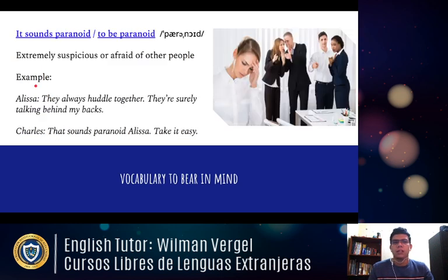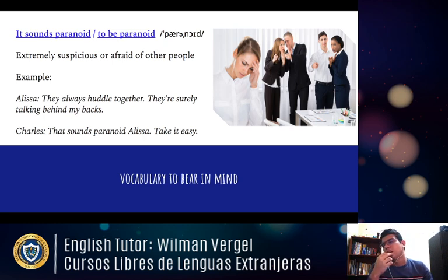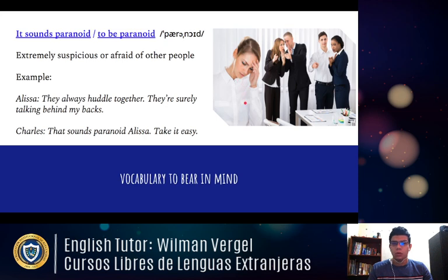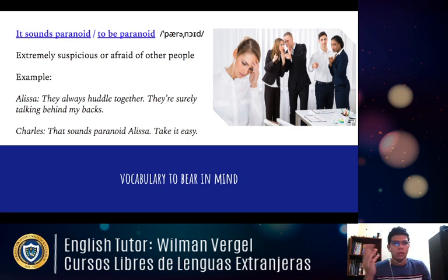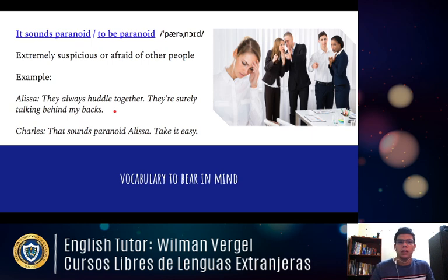The next expression is 'paranoid' — pronunciation: 'paranoid.' It means extremely suspicious or afraid of other people. This especially applies when someone is supposing something but not sure. In the picture, the girl is worried and extremely suspicious about what her coworkers are talking about — 'Are they talking about me?' She's paranoid. Example: Alicia says, 'They always huddle together; they're surely talking behind my back.' And Charles says, 'That sounds paranoid, Alicia. Take it easy' — meaning don't exaggerate.